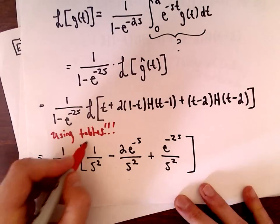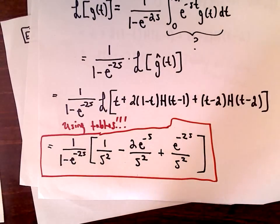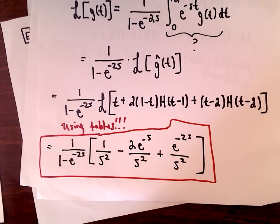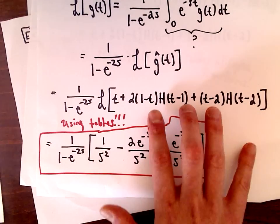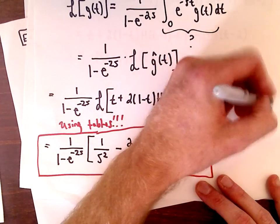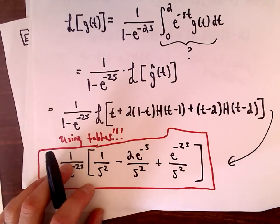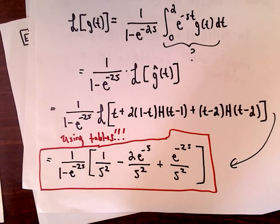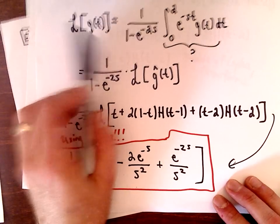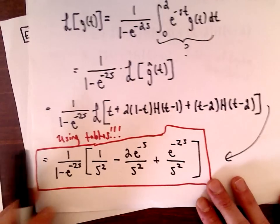That's the basic idea: we turn our periodic function g of t into the new function g-hat of t and use that to compute the Laplace transform. If you need more examples of Laplace transforms of Heaviside functions, feel free to ask.